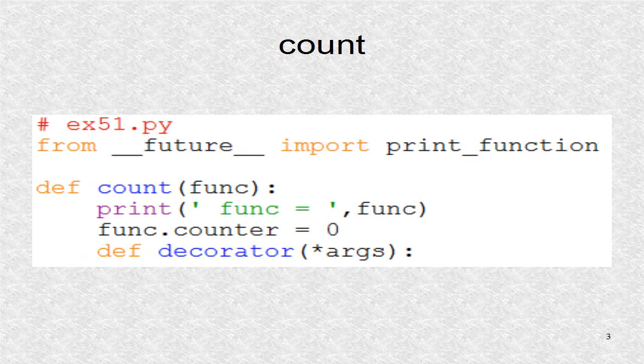In the main program, the print function is imported so Python 3 print statements can be used inside Python 2.7. Next, we have a function count. It will have one argument, a function name. We print the function in the next statement.